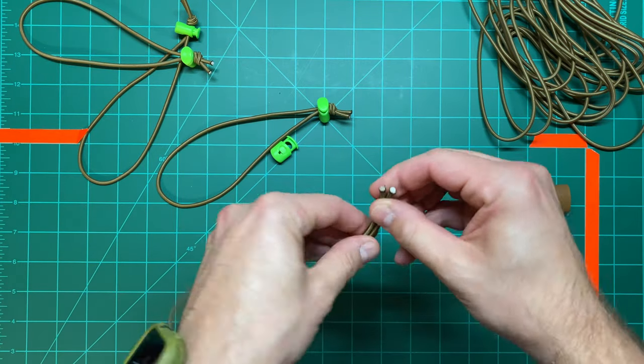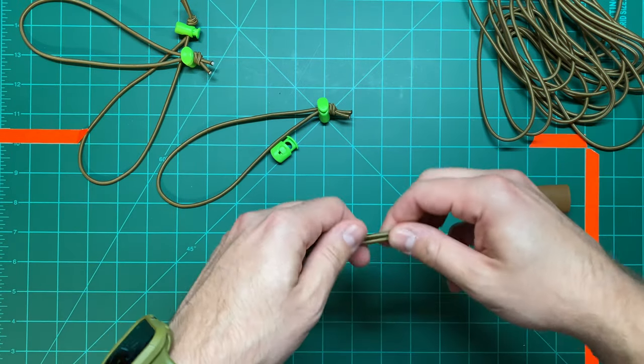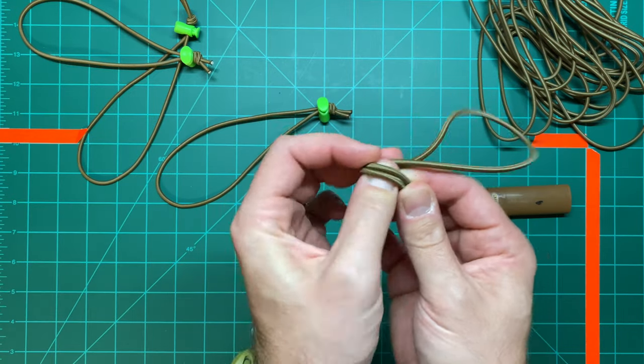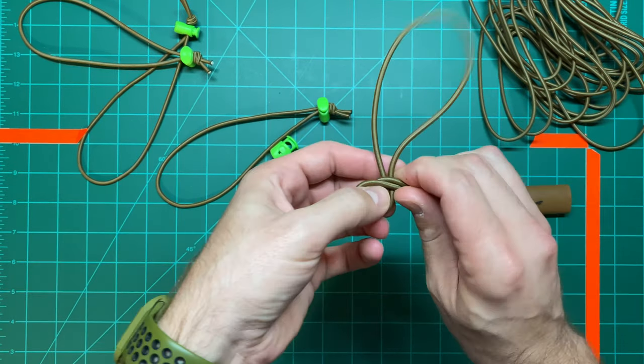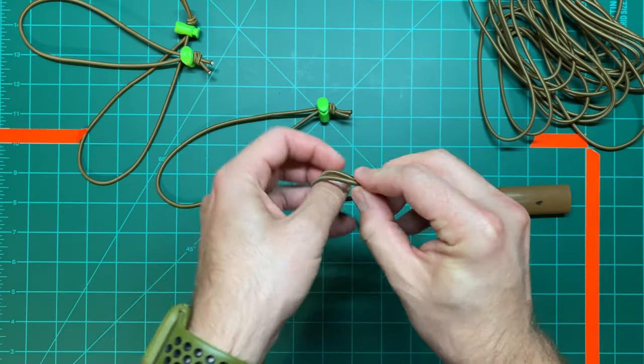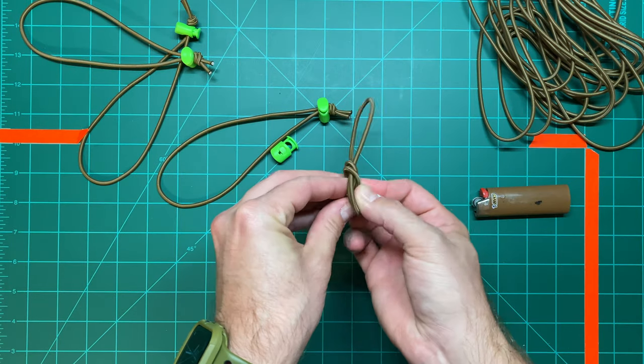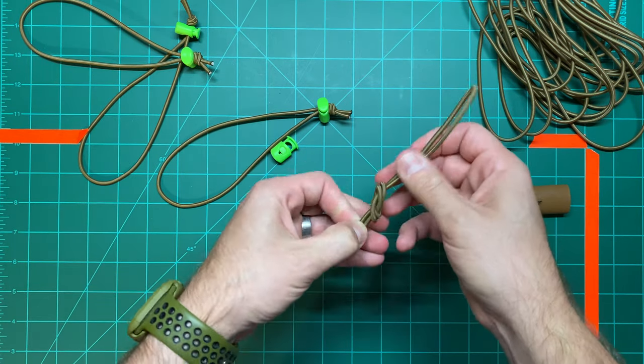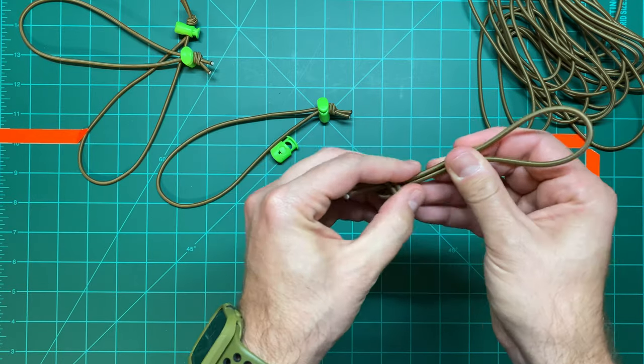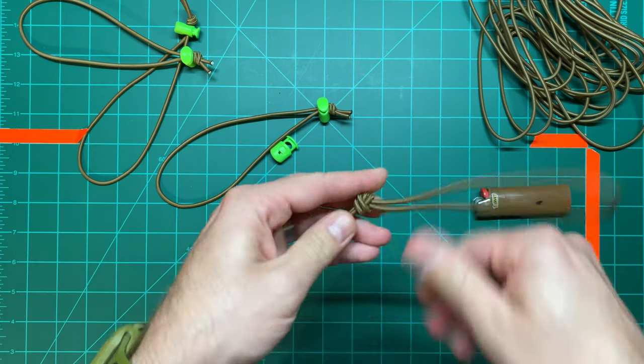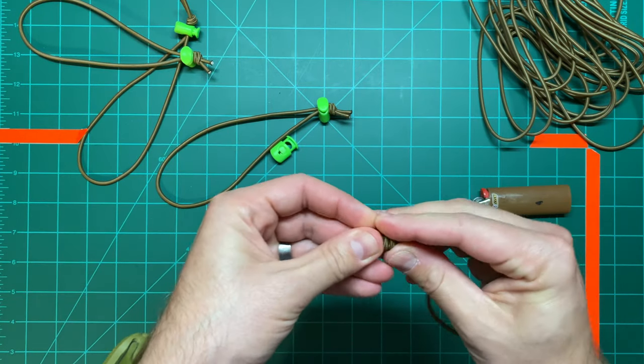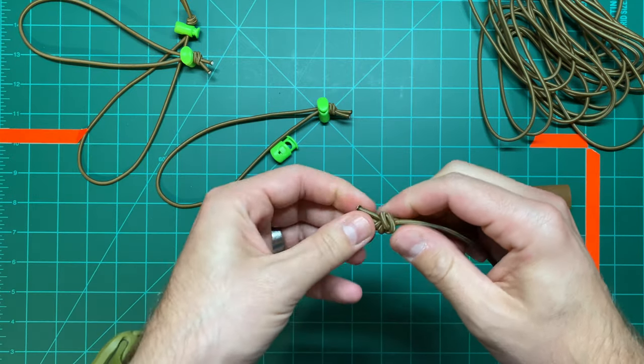And then you can tie these off. Just do a half hitch. No need for anything fancy, because as long as you have a knot there, it's not going to slip through the stopper.